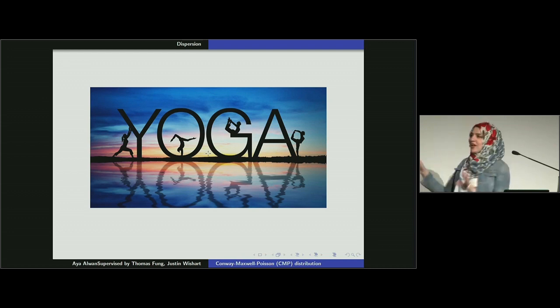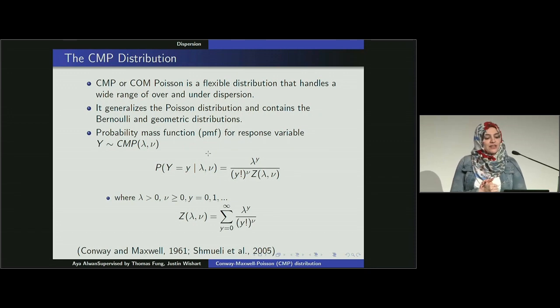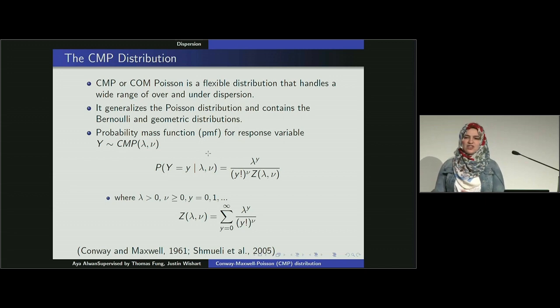So what's the thing? Why is it yoga here? It's not because I'll be doing yoga during my PhD research. It's just to tell you how flexible is that model. It's got two parameters only and it's flexible, can fit all levels of dispersions. So it's CMP or Compoisson, just abbreviation. It generalizes the Poisson distribution and contains Bernoulli and geometric distribution in special cases.